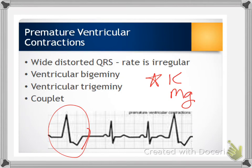Patients can have PVCs with absolutely no signs or symptoms at all. Other times, they can have signs and symptoms of reduced cardiac output. The complication we are most concerned about is ventricular tachycardia. Treatment is to address the cause — for example, reducing caffeine intake — and patients may also be started on beta blockers.